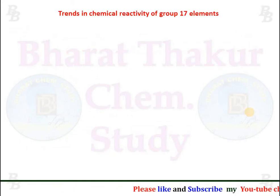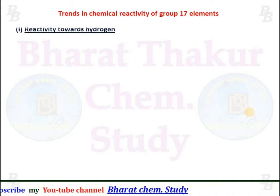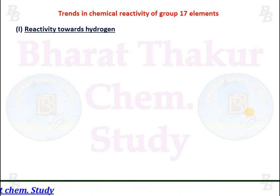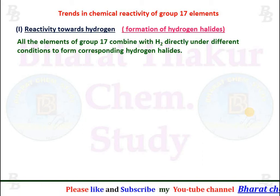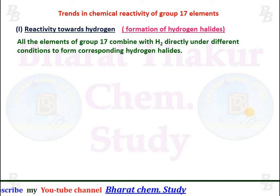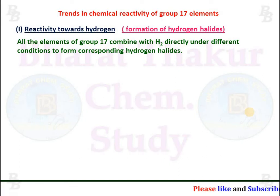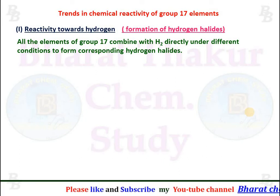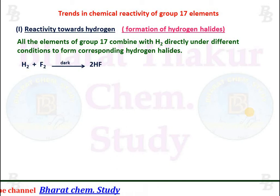Trends in chemical reactivity of group 17 elements. Reactivity towards hydrogen — the formation of hydrogen halides: all elements of group 17 combine with hydrogen directly under different conditions to form their corresponding hydrogen halides. Fluorine reacts with hydrogen in the dark to form HF.